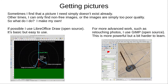Sometimes I find that the picture I need simply doesn't exist, or maybe it does but it isn't free to use, or it's simply too low quality for my purposes — in which case I make my own. For simple diagrams I prefer to use LibreOffice Draw. This is basic but easy to use. I spent a fair bit of time ensuring this diagram of circumpolarity is astronomically accurate and to scale. For more advanced work, such as retouching photos, I use GIMP, also open source. This is more powerful but a little harder to learn, and is often considered a free alternative to Adobe Photoshop.